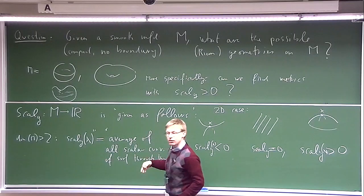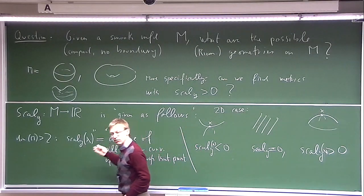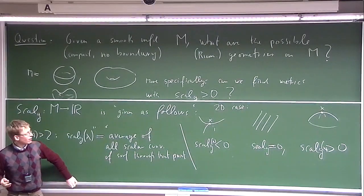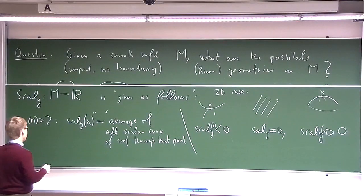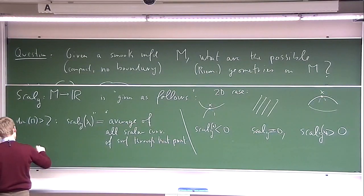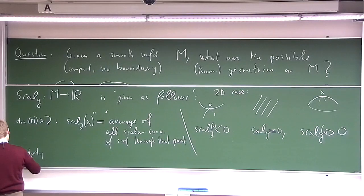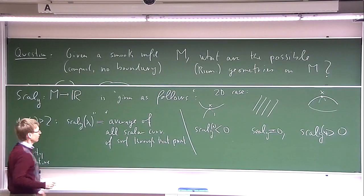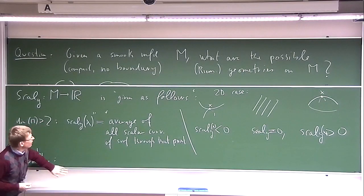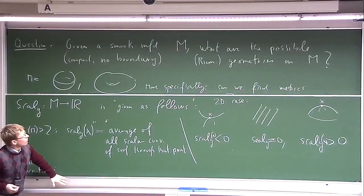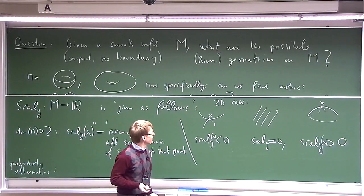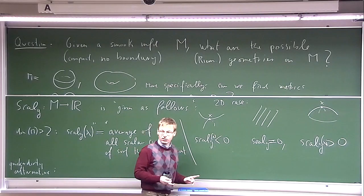You can make this precise in many different ways: write down the curvature tensor and contract it twice, or averaging means you integrate something. I could also give a quick ad hoc definition. If you have a Riemannian metric, it's good for measuring distances — the distance between two points is the length of the shortest curve between them.